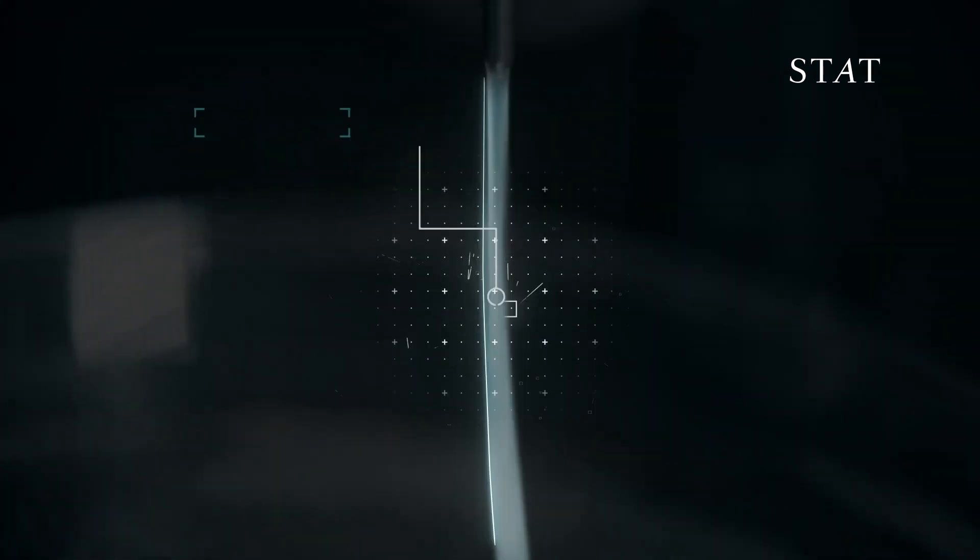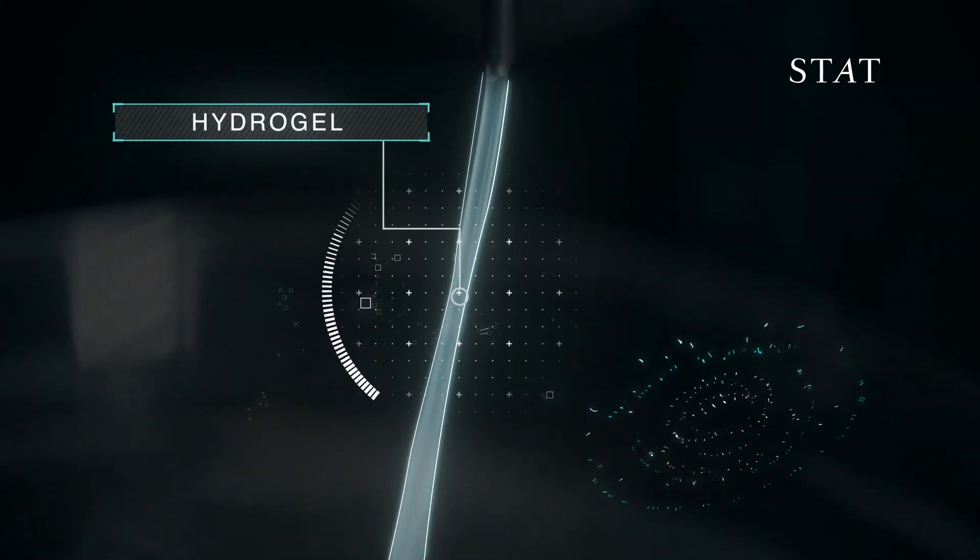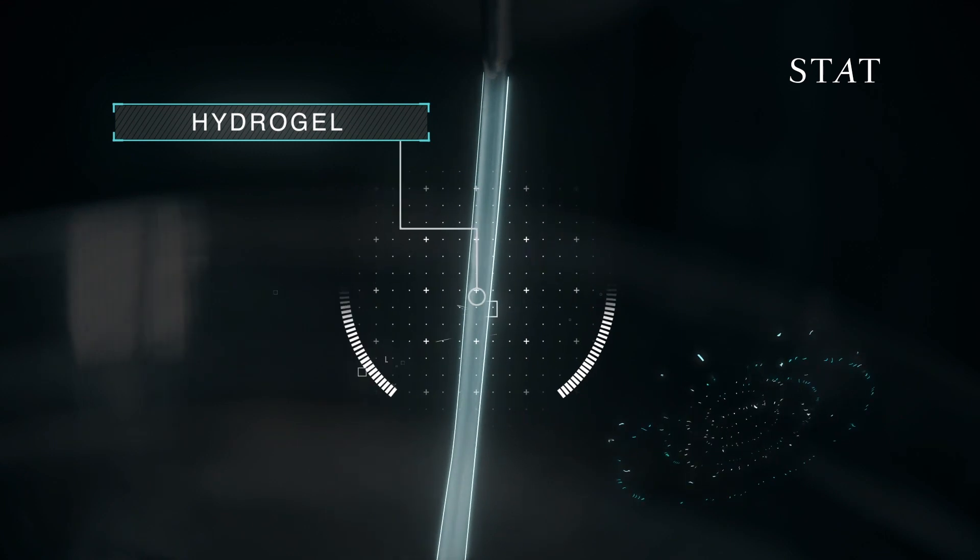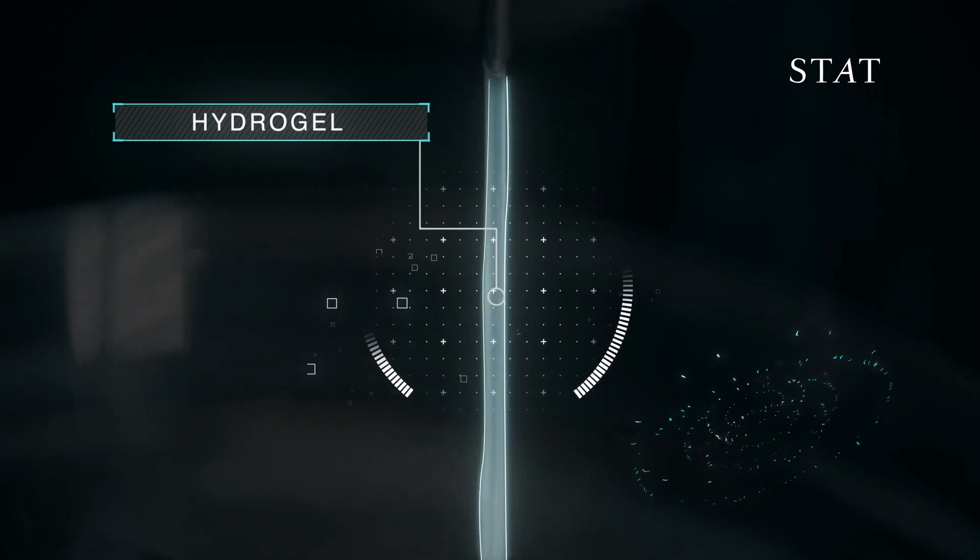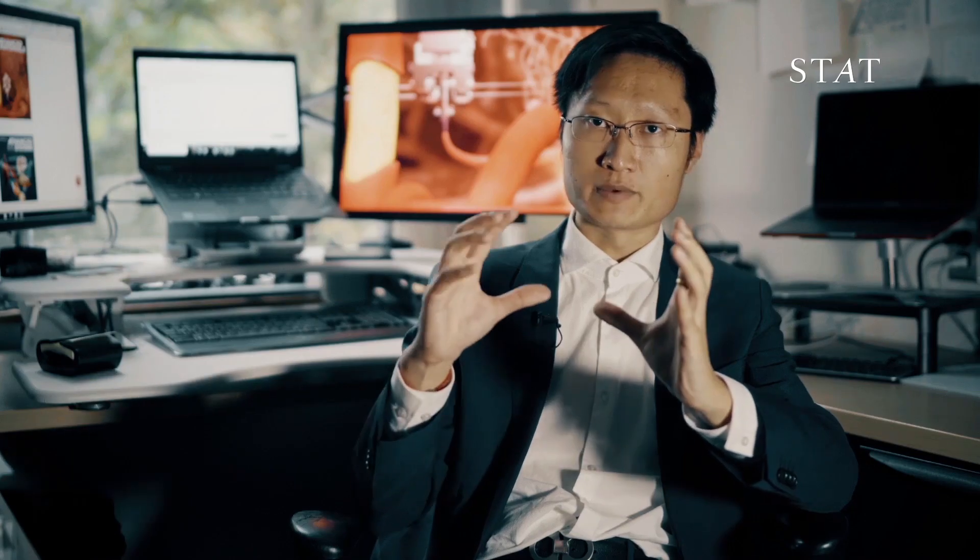That's essentially like a gel-like matrix, an interconnected network of materials in a water-rich environment. So if you put cells in this matrix, then the cells can actually grow inside.